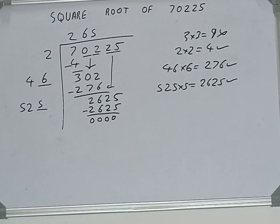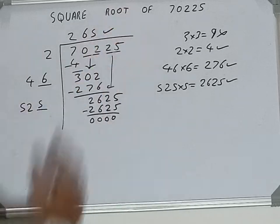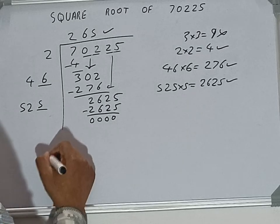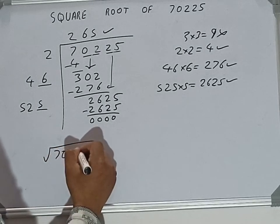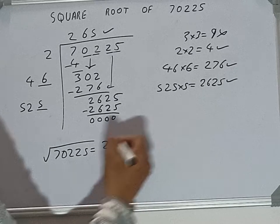Subtract, zero will be left. Once we get zero, the answer will be the quotient, that is 265. So square root of 70225 will be 265. That's it.